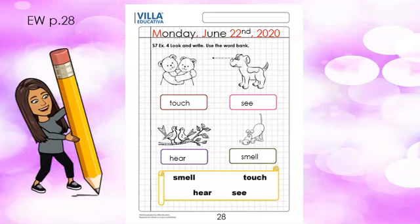Don't forget to write the complete date. You are going to write here how the animals communicate. Follow the pictures. Use this page to check your answers.